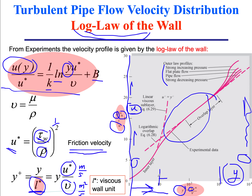Very close to the wall we have the inner layer with a linear velocity profile. The pipe roughness can modify this inner layer. Now, y is the distance from the wall, which equals the pipe radius R minus the distance from the center of the pipe r. So at the wall y equals zero, and at the centerline y equals R — an inverse relationship between small y and small r.